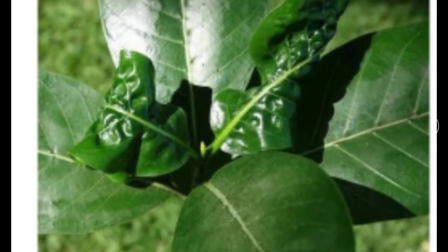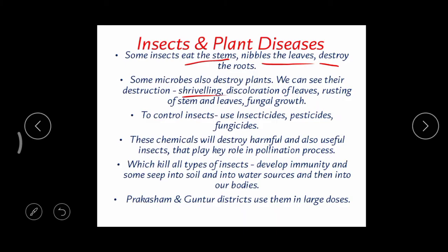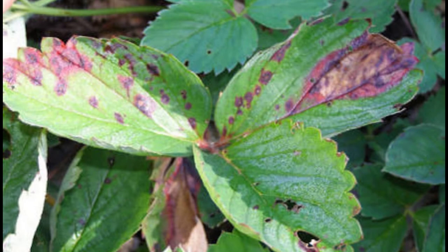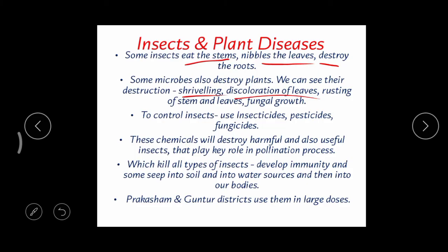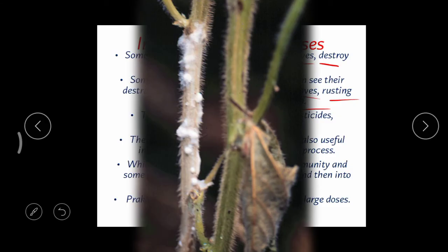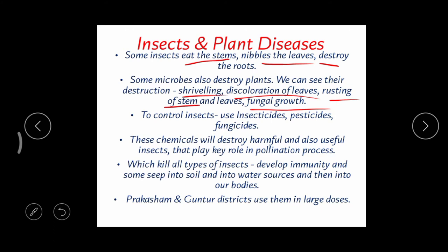Some microbes also destroy plants — we cannot see them, but we can see their effects. What type of destruction do they cause? Shriveling — the leaf gets folded inwards. Discoloration — some parts of the leaf turn yellow or brown. Rusting — brown colored patches over the stem and leaves. Fungal growth — white powdery structures visible over the plant parts indicate a fungal infection.